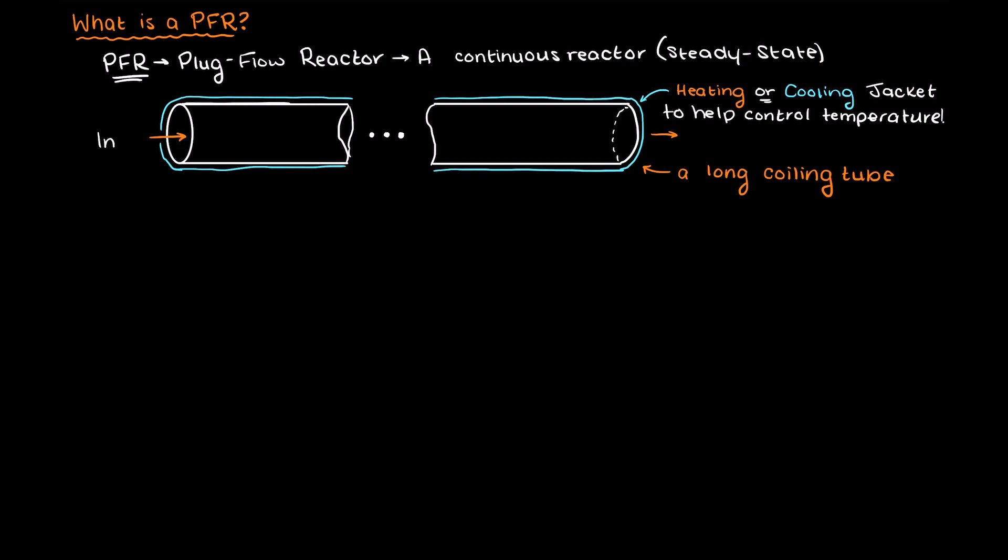In these types of reactors there is just one inlet and one outlet, and as the reactant works its way through the reactor it is constantly being converted to the product of interest.